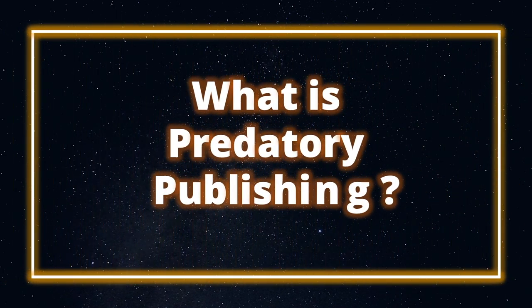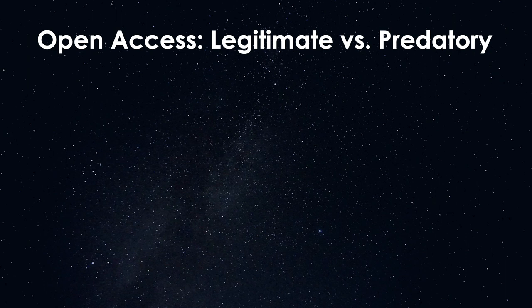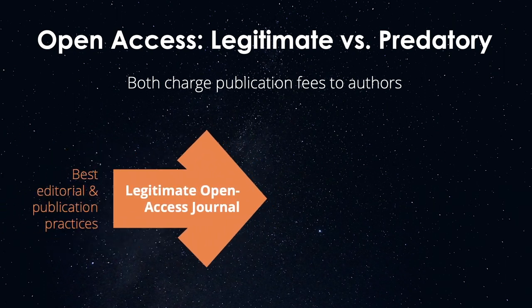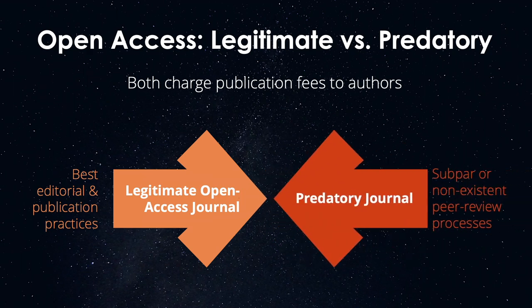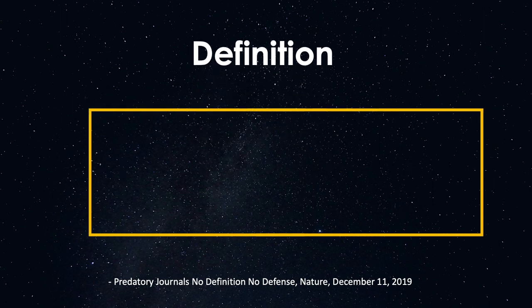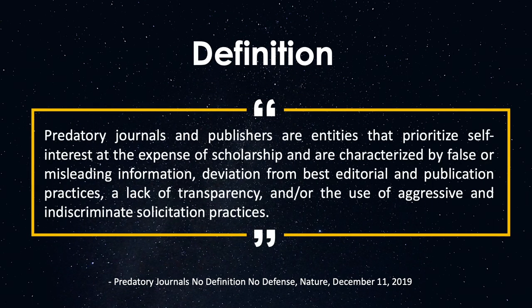So what is predatory publishing? Like legitimate open access journals, predatory journals charge publication fees to the authors. But unlike legitimate open access journals, which follow the best editorial and publication practices, predatory journals have subpar or non-existent peer review processes. In 2019, Nature defined predatory journals and publishers as entities that prioritize self-interest at the expense of scholarship and are characterized by false or misleading information, deviation from best editorial and publication practices, a lack of transparency, and or the use of aggressive and indiscriminate solicitation practices.